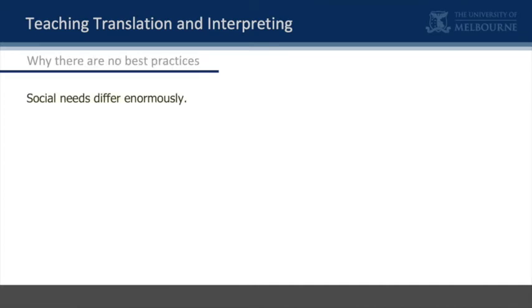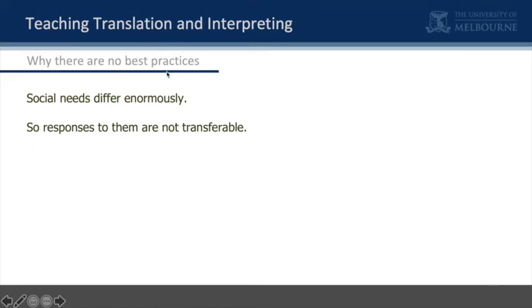Given that the social needs differ enormously depending on the historical situation and the languages concerned, the responses to them are not immediately transferable. You can't just pick up what is done in Geneva and do it in Melbourne, or look at the way interpreters are trained for the United Nations and apply that to training interpreters for indigenous communities in Australia — it doesn't make sense. This idea of best practices — that there are some places in the world that do this thing very well and all we have to do is copy them — doesn't work. It can't work; it'll be doomed to failure.